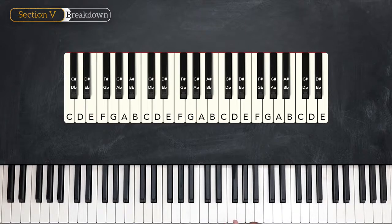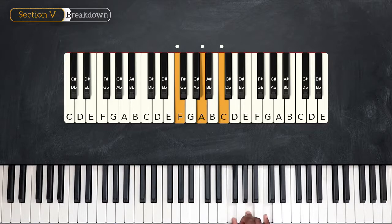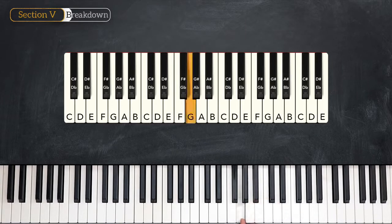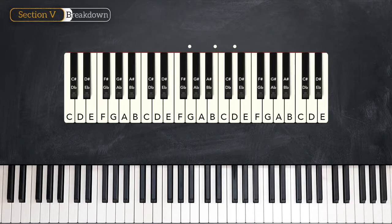Next up we have F. F major: we have F, A, and C. All those notes are in the C major scale. So F in C is major. Moving up, we have G. G major: G, B, and D. Also here all the notes are in the C major scale. So G is major in C.